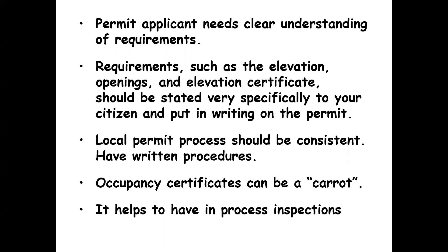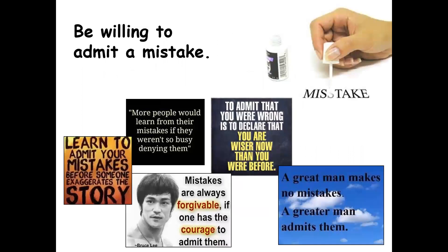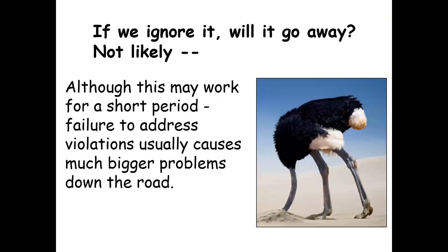In-process inspections before things are done are important. Make sure there are no loopholes — permits should be very specific. Schedule inspections so you're doing them every single time in the same way. If there are administrative issues and you make a mistake, be willing to admit that. We had a case where we couldn't find a permit, and it turned out the person did have one but administration had misfiled it. If you note in your first violation notice that it's pending verification, it gives you wiggle room in case you made the mistake. Just apologize and get it fixed.